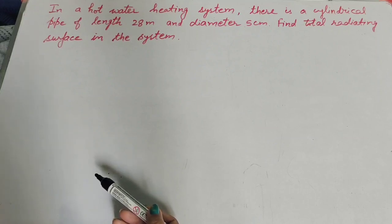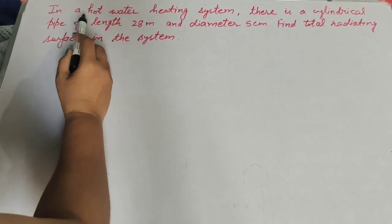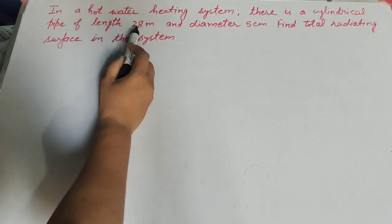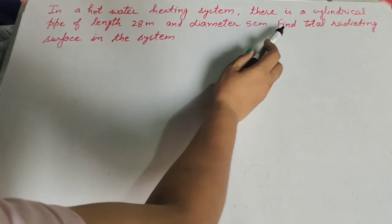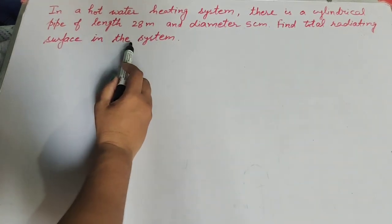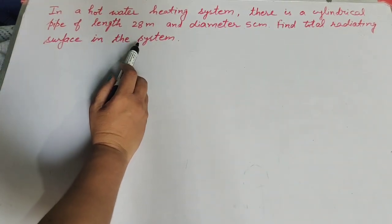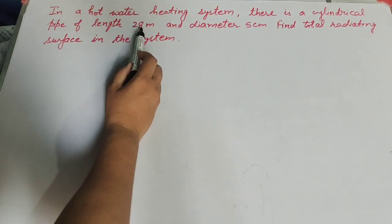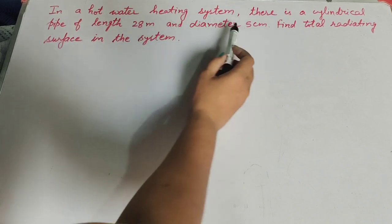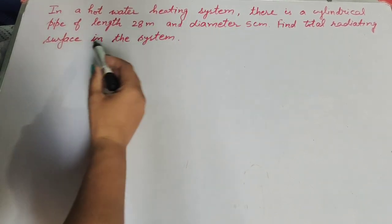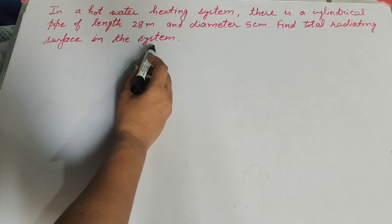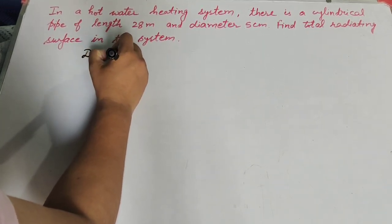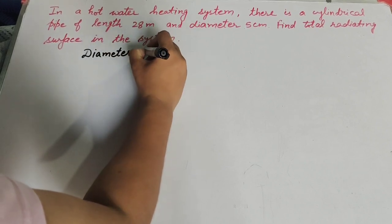Hello friends, welcome to my channel. In this video we discuss: in a hot water heating system there is a cylindrical pipe of length 28 meter and diameter 5 centimeter. Find the total radiating surface in the system. Given is the length of the cylindrical pipe 28 meter and diameter of pipe 5 centimeter. We find the total radiating surface of the system, that means we find the curved surface of the system.